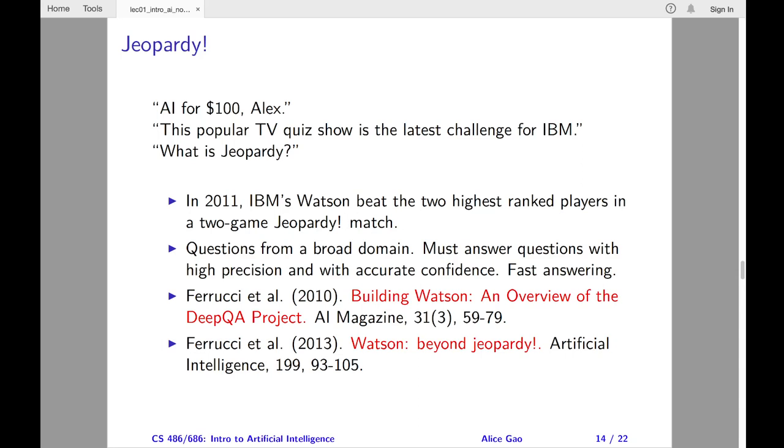DeepQA stores 200 million pages of information, including Wikipedia articles and relational databases. And it is not allowed to access the internet. For each potential answer, DeepQA uses hundreds of algorithms to study the evidence and assigns a score to the answer. Finally, DeepQA generates a ranked list of answers.